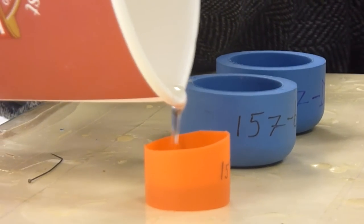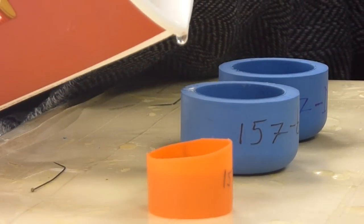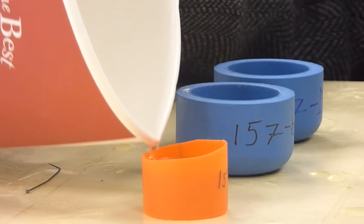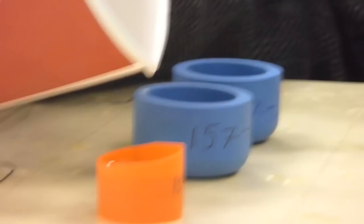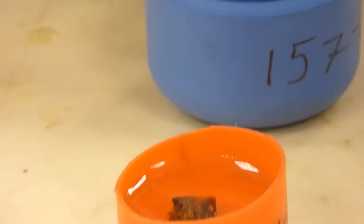You want the level of the mixture to be higher than the piece of amber by a little bit, just so that you don't get bubbles adhering to the top of the amber. And also because you want it completely to be submerged.